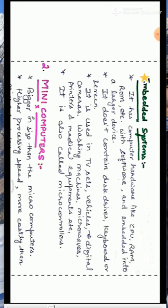Embedded systems do not contain any keyboard, mouse, screen, etc. Because of the embedded system, these large devices work automatically — meaning all these devices are controlled by the embedded system. Embedded systems are also called microcontrollers. For example, whenever we use a microwave and set the timings, automatically the microwave stops as per the timing set for cooking. All this is handled by the embedded system of the microwave.